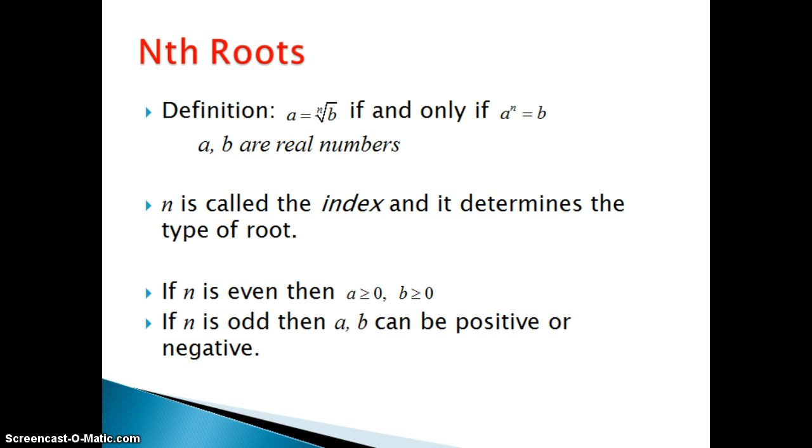Now cube root is not the only other type of root. We can have any root and we call these nth roots. By definition, a is equal to the nth root of b if and only if a to the nth power is equal to b. And for this definition a and b are real numbers. n that you see in this little elbow of the symbol is called the index and it determines the type of root that you have.